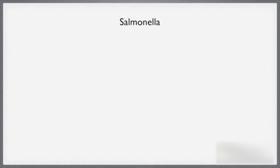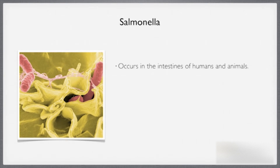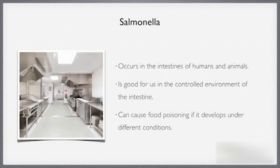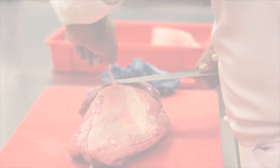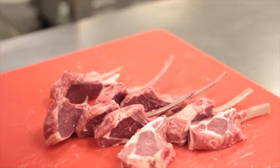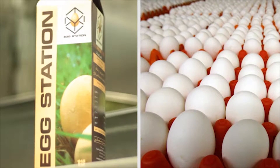Salmonella is a pathogen that occurs in the intestines of humans and animals. Although it performs particular functions when it occurs naturally in the body, and it is good for us in the controlled environment of the intestine, Salmonella can cause food poisoning if it is allowed to develop in a food environment under different conditions. Food that can be affected by Salmonella includes poultry, meat, eggs, and shellfish.